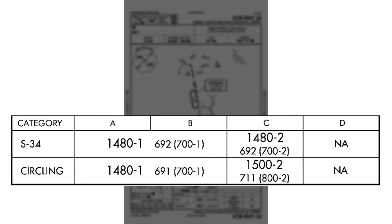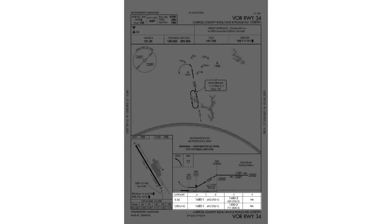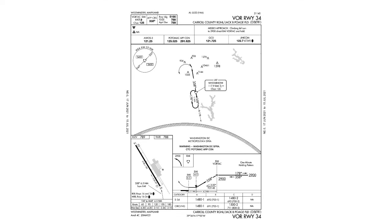So that's a quick rundown of the basics you'll see on every instrument approach procedure — those six elements. We'll get into a lot more detail when we look at specific types of approaches like precision approaches, non-precision approaches, RNAVs, ILSs, and so on. But just remember, when you're first looking at these plates, these are the six segments you're going to see on each one of them.